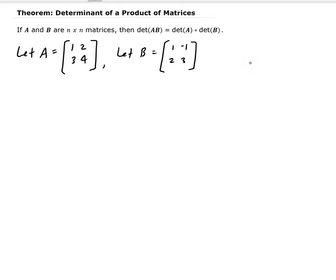In this lesson, we're going to talk about the determinant of a product of matrices. The theorem states that if A and B are n by n matrices — in other words, if they're both square matrices — then the determinant of the product of A and B is equal to the determinant of A times the determinant of B.